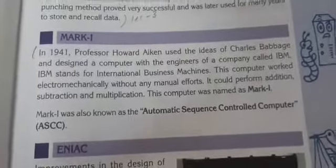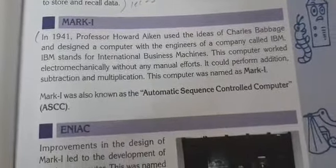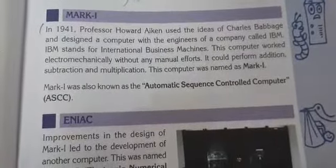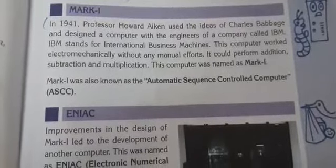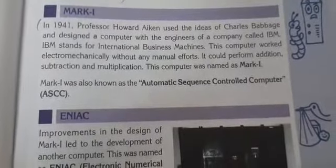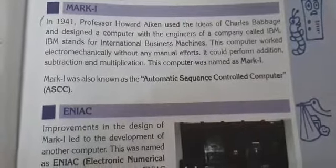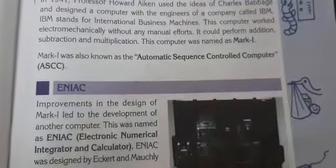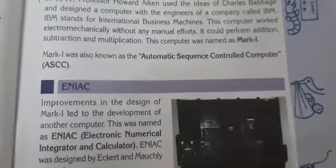Mark 1. In 1941, Professor Howard Aiken used the ideas of Charles Babbage and designed a computer with engineers of a company called IBM — International Business Machines. This computer worked electromechanically without any manual effort. It could perform addition, subtraction, and multiplication. This computer was named Mark 1, also known as the Automatic Sequence Controlled Computer (ASCC).